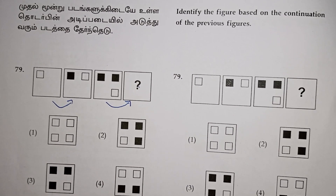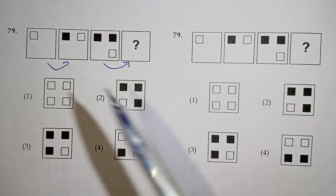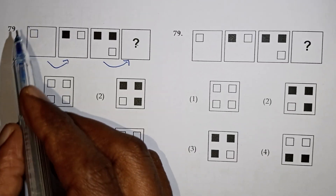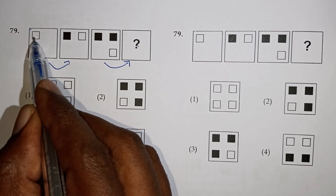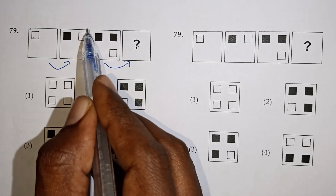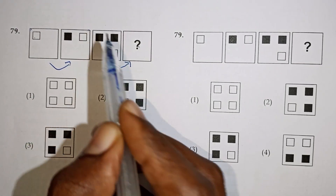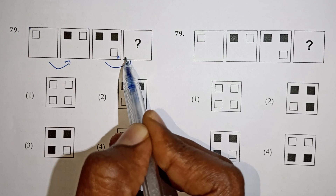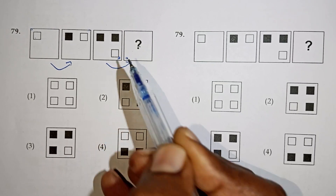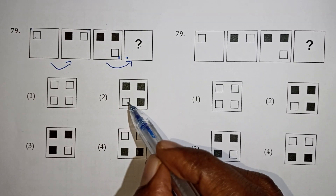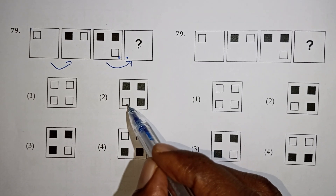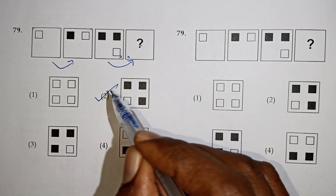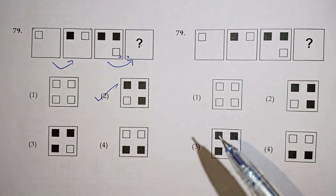If you look at this, the white dot is made. There is a white dot. Then if you look at this diagram, this is a black dot. If you look at this diagram, this is a white dot. So there is a white box, a white dot, and three black dots. The second option is the correct option.